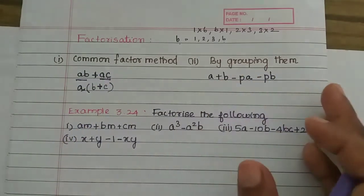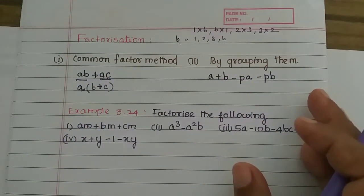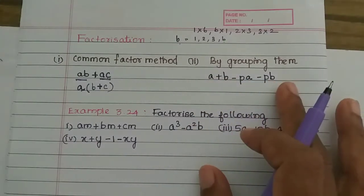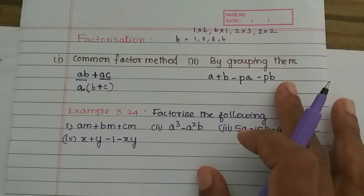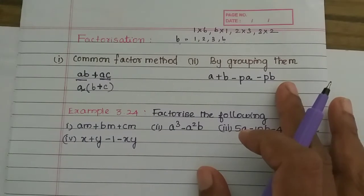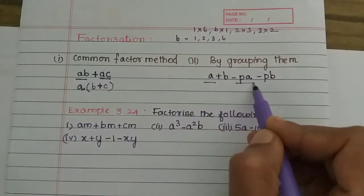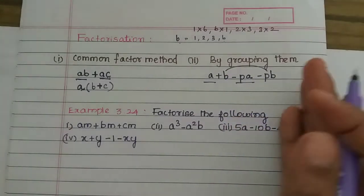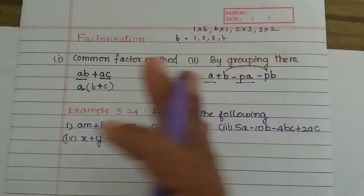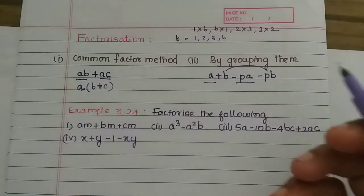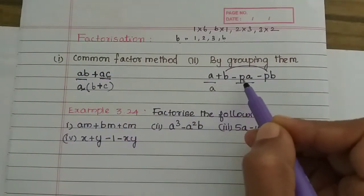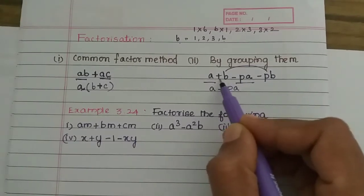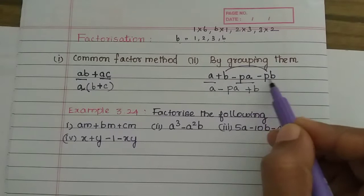The second method is grouping. What is grouping? If there are four terms and no single common term is present in all terms, but in two terms A is common and in the other two terms B is common, then a group is made. We will learn two groups: A is one group and B is one group. So A is in the pocket — minus PA — then B is in the pocket — minus PB.